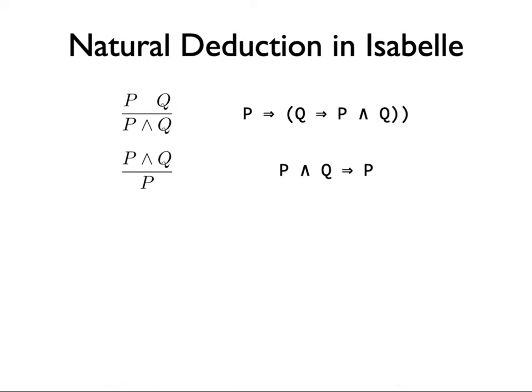The elimination rules for conjunction in their simplest form: if you write them in Isabelle, all you have to do is replace the inference line by a fat arrow. There's the first one, and there's the other one.